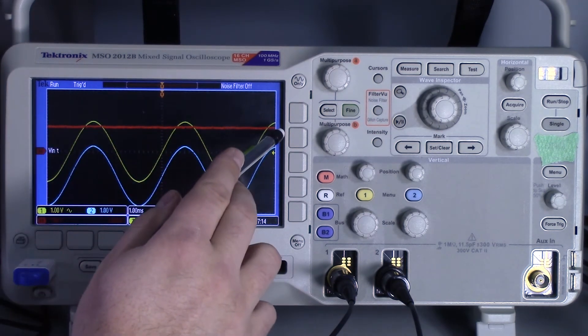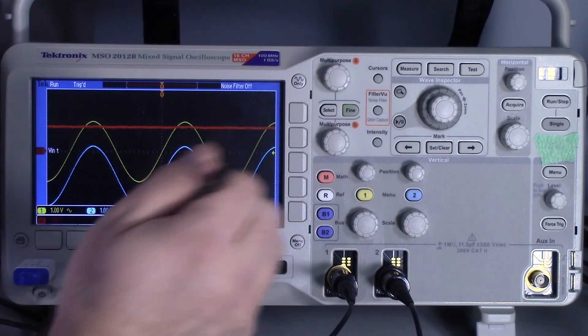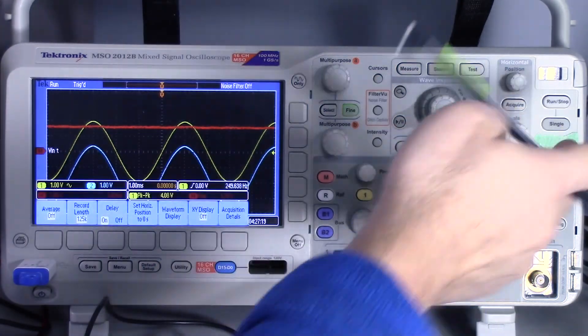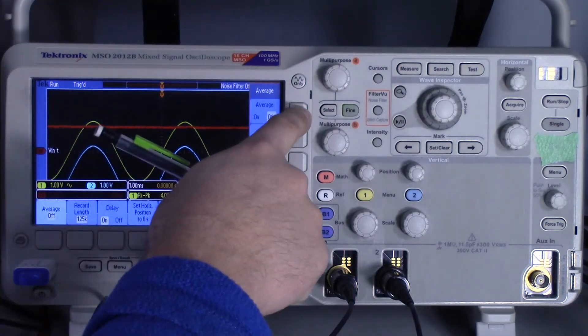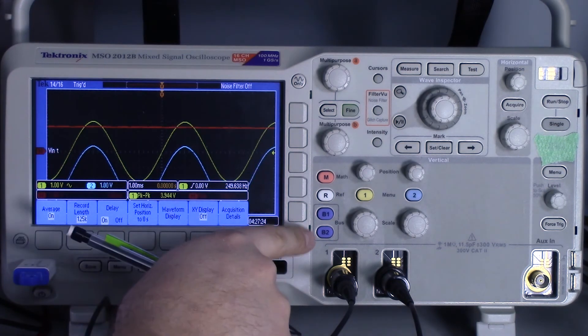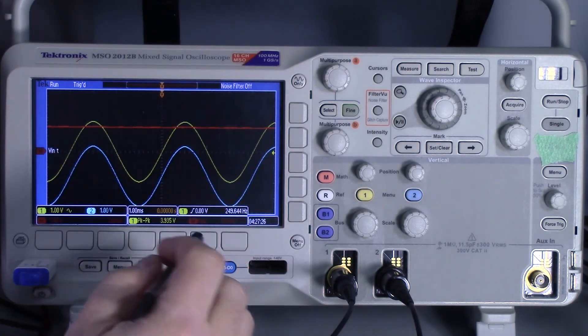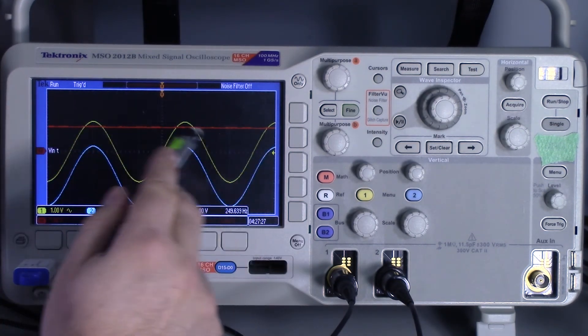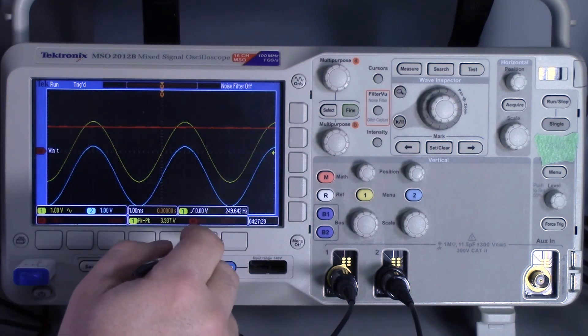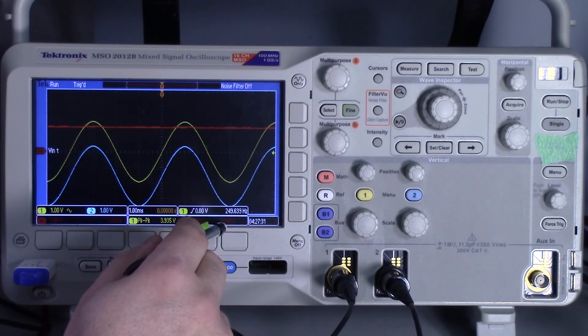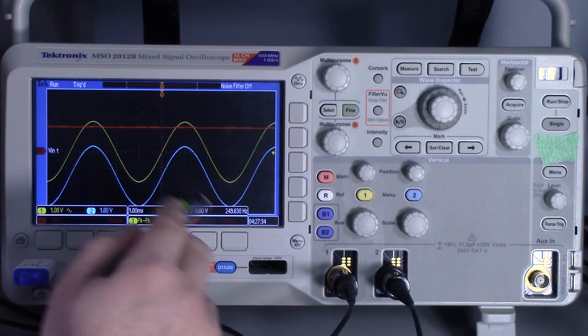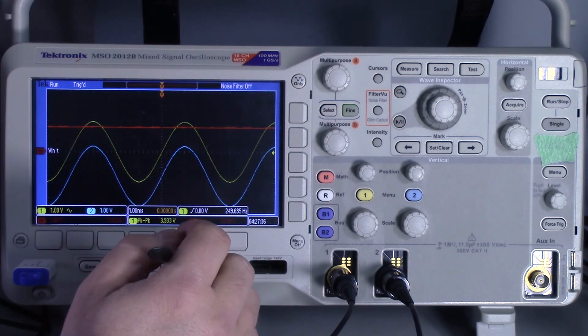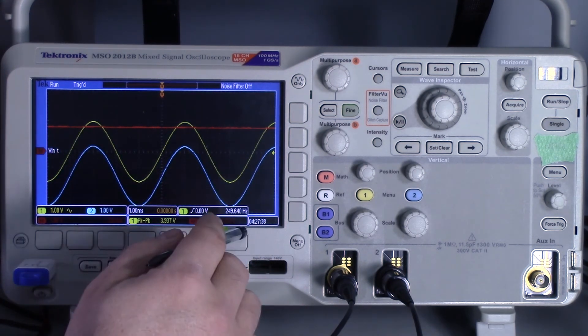Now if you want to, we can even clean this up a little bit. We can turn averaging on, and that should filter out all the very small random noise and give us a slightly more accurate measurement. So again, we're getting close to about 1.6 DC.